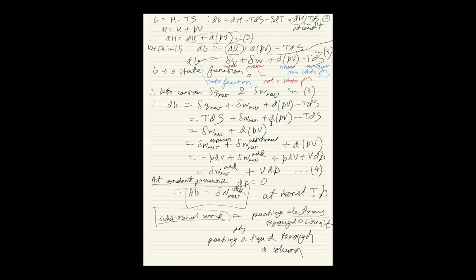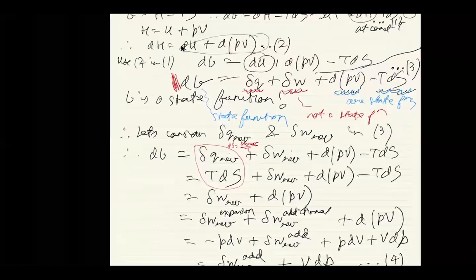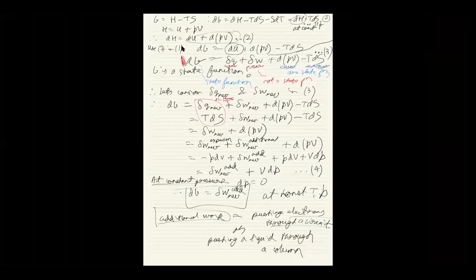Where did TdS come from? In equation 3, we had δq and δw, which we didn't know how to deal with. But since dG is a state function, we can use the reversible path. We changed δq to δq_reversible, and δq_reversible = TdS by definition — that was our definition of entropy: dS = δq_reversible / T. You should not be forgetting that.